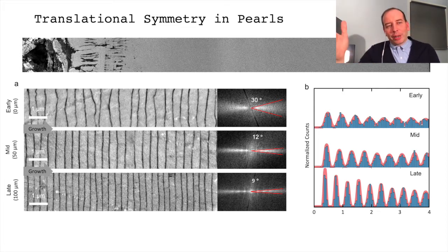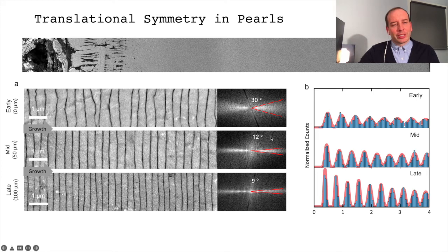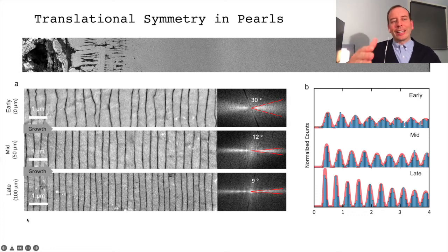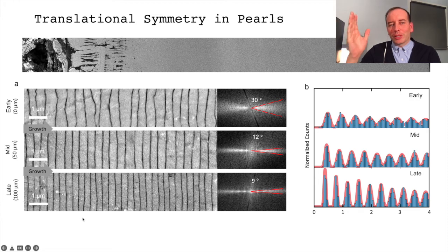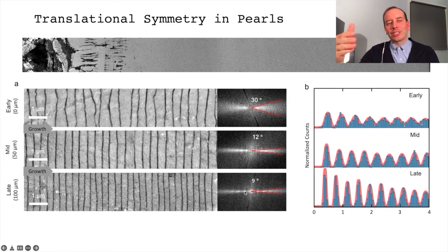Mid-nacre, which is only 50 microns away from the start of nacre, the broadening is reduced down to 12-degree fluctuations of the interface normal, and the tablets start to become much more periodic. By 100 microns, the nacre tablets become very smooth, very flat, with 9-degree surface normal fluctuations, and the Fourier transform shows sharp peaks, suggesting strong periodicity of the system.